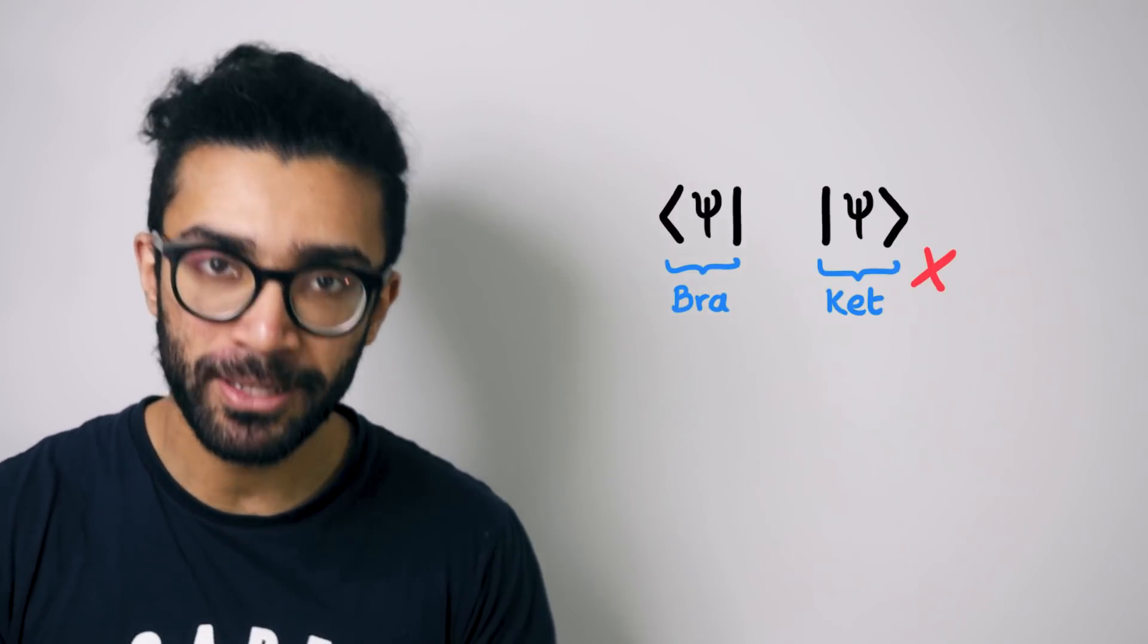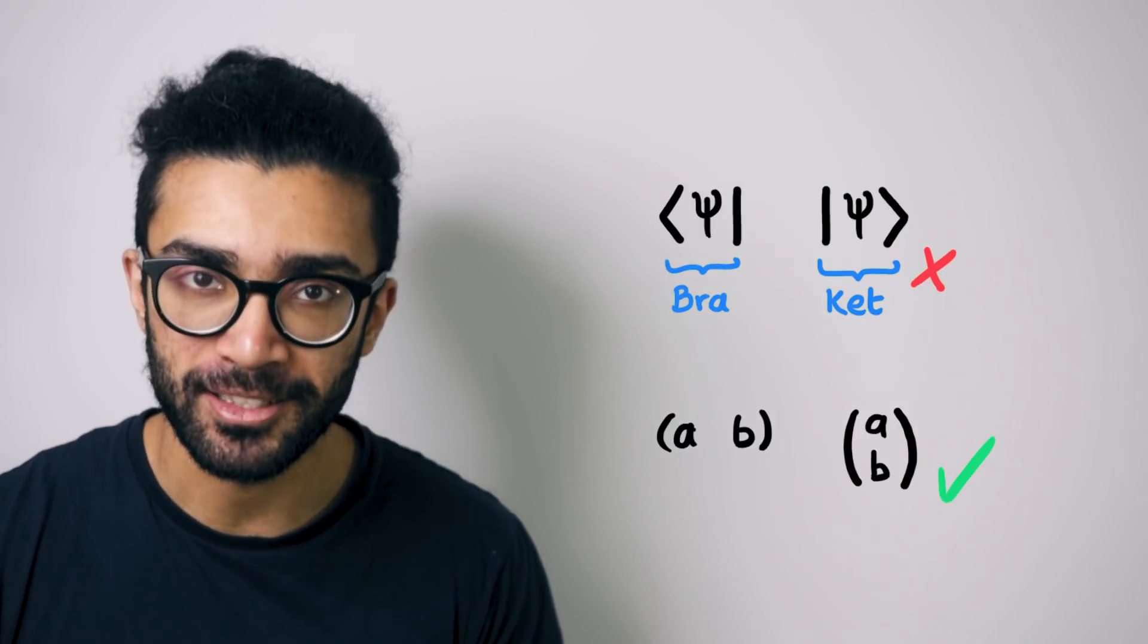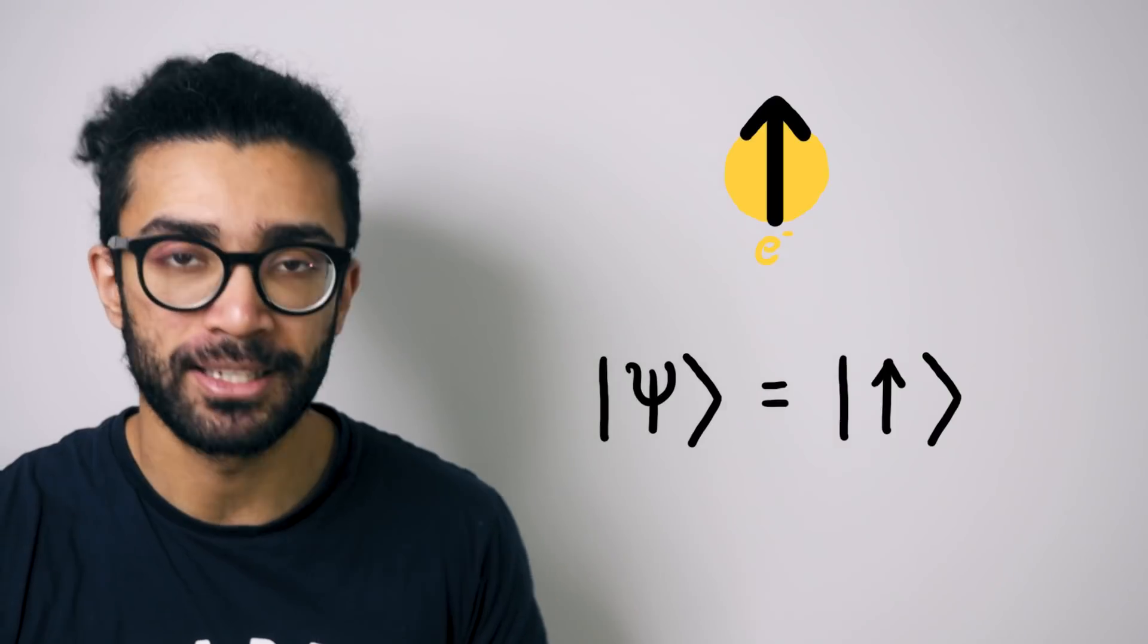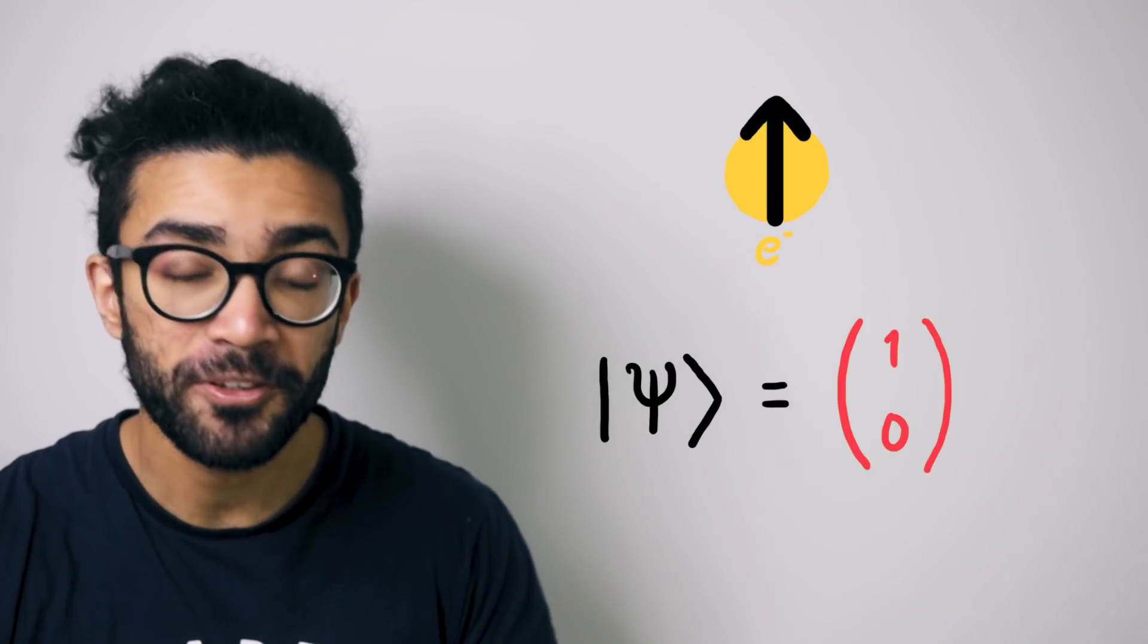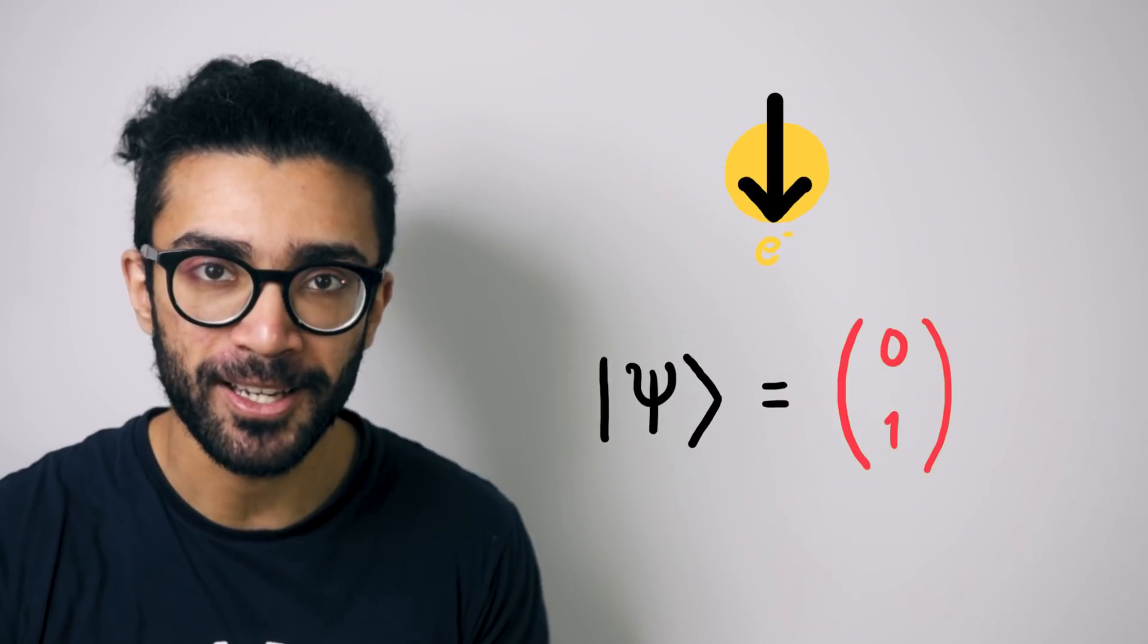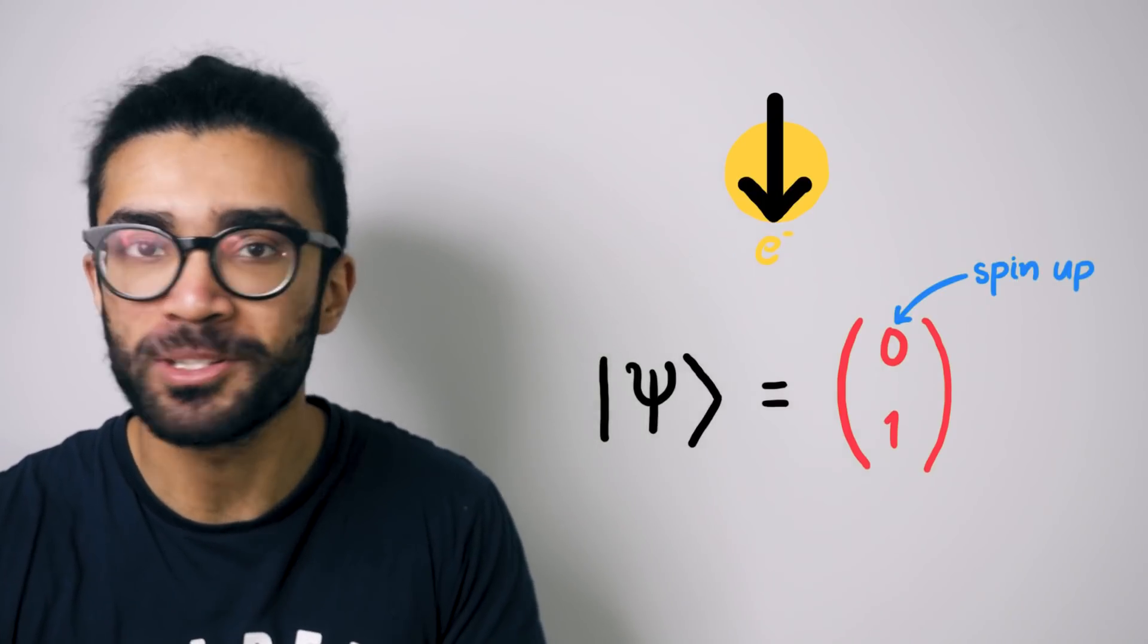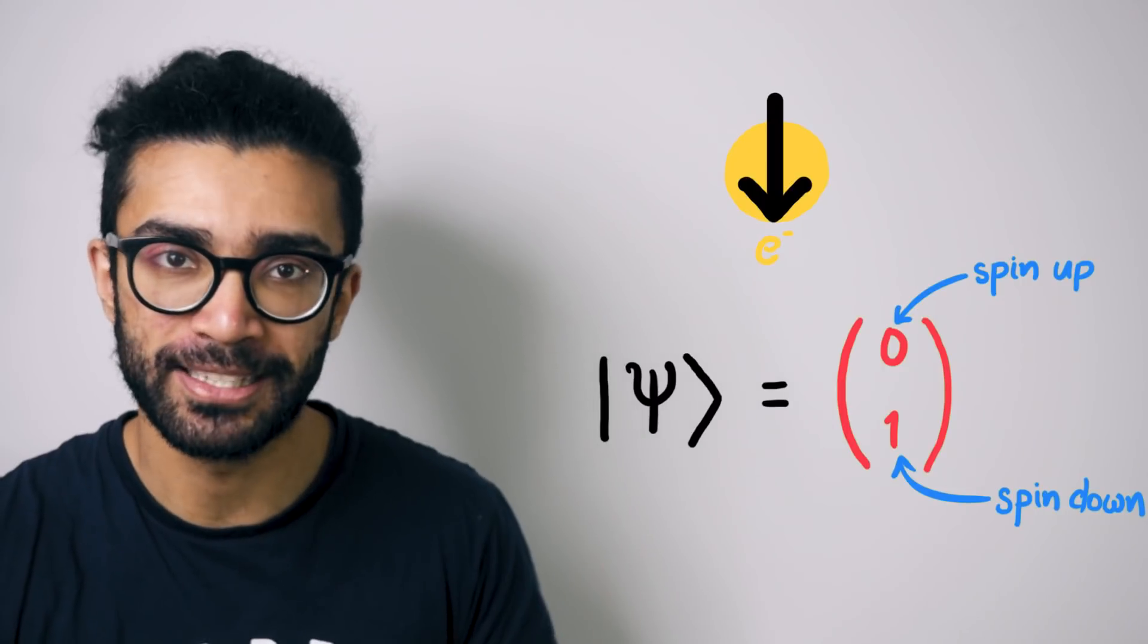Instead of using bra and ket notation to represent our particle's possible spin states, we will now use vectors. We'll say that if a particle is in the spin-up state, then it's represented by this vector here. And if it's in the spin-down state, then it's represented by this vector here. Basically, the top number represents how much of our system is in the spin-up state, and the bottom number represents the spin-down state.